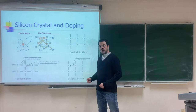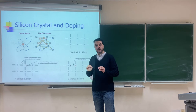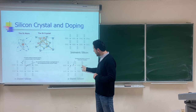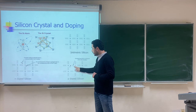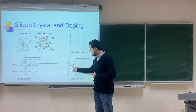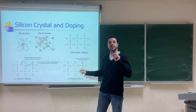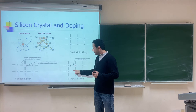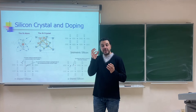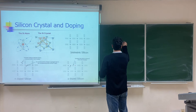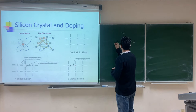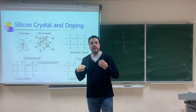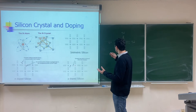On the other hand, if we dope silicon with an atom that has three electrons in the last orbit — like boron — the boron atom connects with three silicon atoms using its three electrons. In the fourth bond, there is only one electron from the silicon atom and an empty place that was supposed to be filled by an electron from boron. We call this empty place a hole.